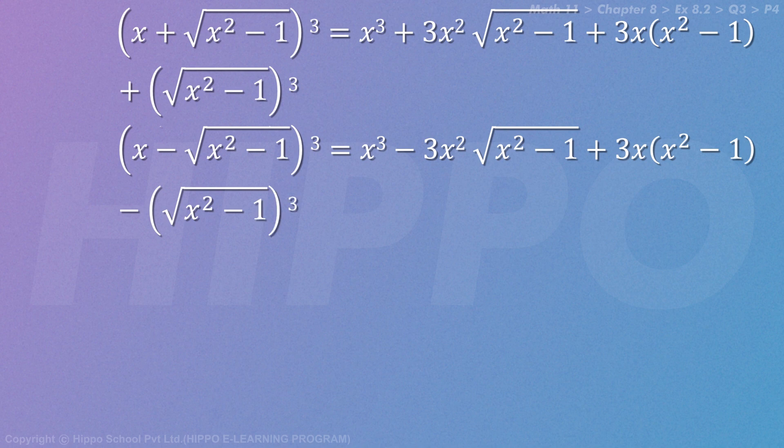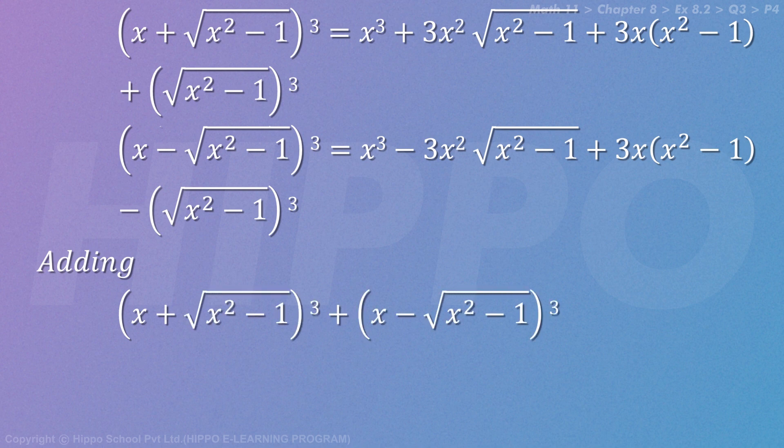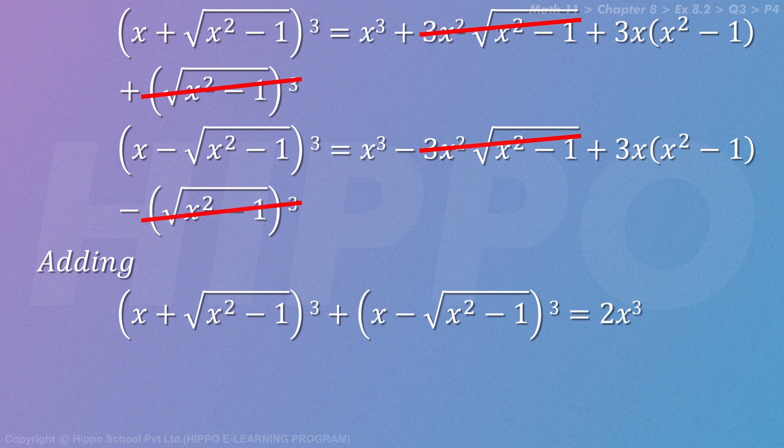Now we're adding both. So adding (x + √(x² - 1))³ + (x - √(x² - 1))³, what happens? The -3x² √(x² - 1) and +3x² √(x² - 1) cancel out, and the cube root terms cancel out.